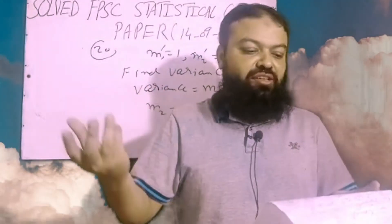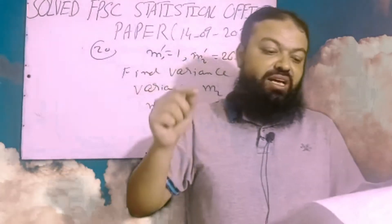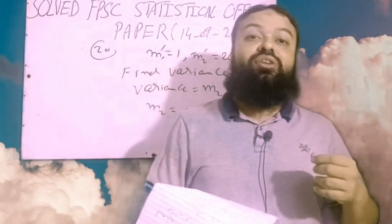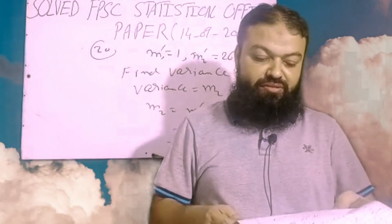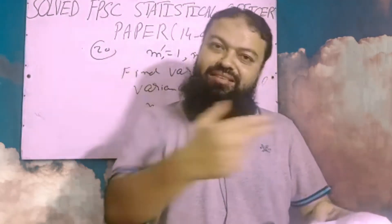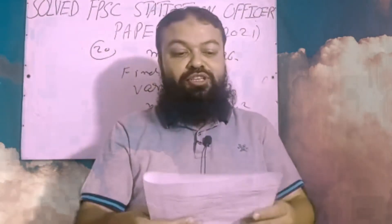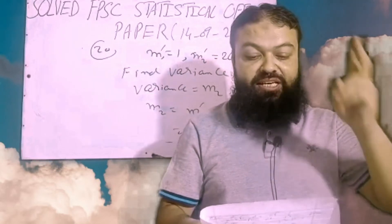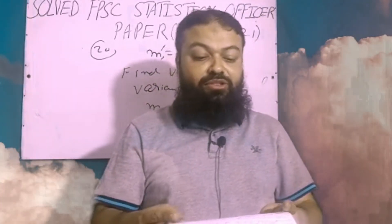Question number twenty-five: mean is equal to — options are median, mode, 56th percentile — none of these is the correct option. Question number twenty-six: standard deviation can never be negative — negative is the correct option to identify. Question number twenty-seven: which is a measure of dispersion? Median and mode are measures of central tendency; interquartile range is the correct answer. Question number twenty-eight: data based on one single time period is called cross-sectional data — cross-sectional data is the correct option.